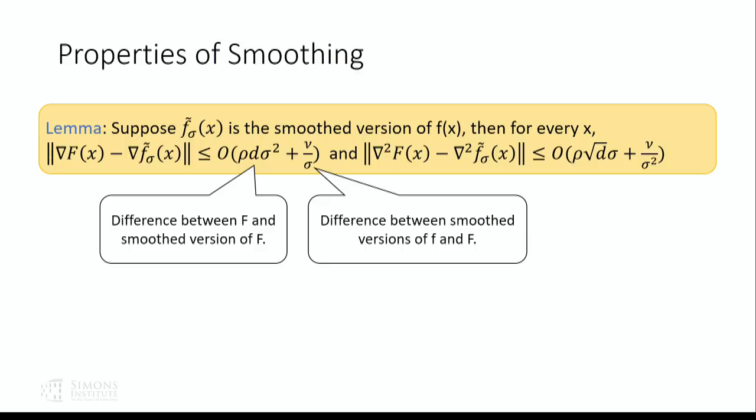If sigma is too large the first term is large and we don't have a good guarantee; if sigma is too small the second term is large. We choose sigma to balance between these two terms. As a corollary, by choosing sigma carefully, we can show that every epsilon-over-approximate local minimum of the smooth function is an epsilon-approximate local minimum of capital F.